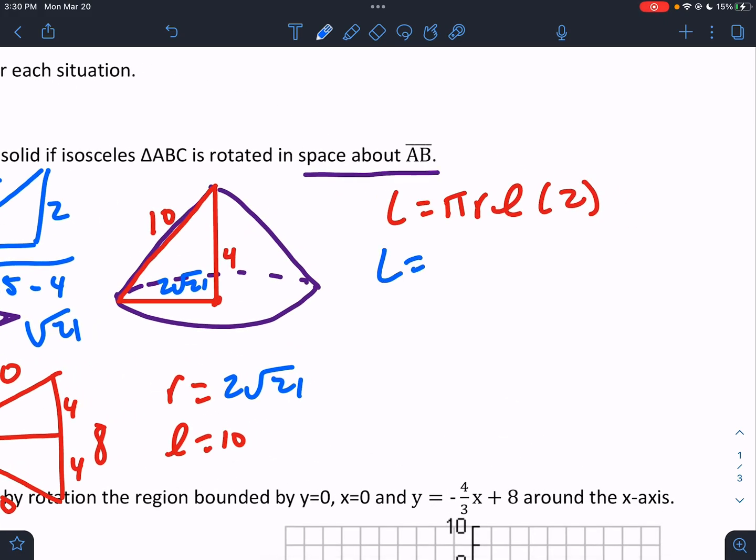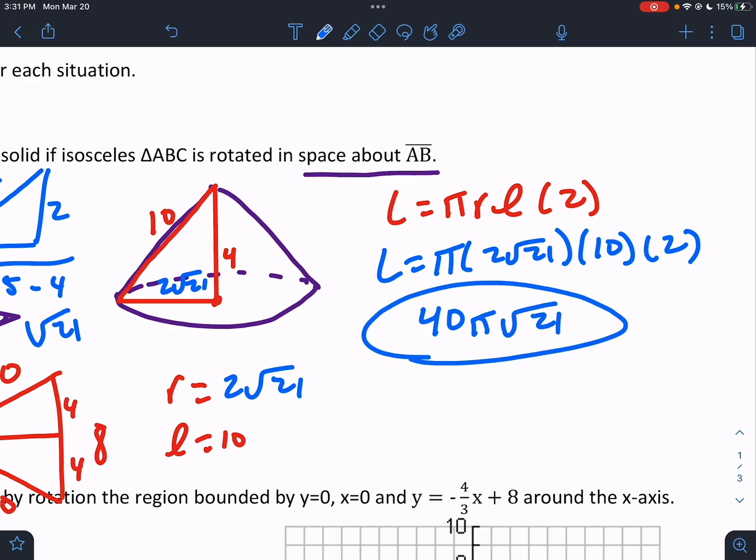So the lateral area would be pi times the radius times the slant height. And then there are two of them. Right? There's a top cone and a bottom cone. We have two laterals that we have to worry about. 2 times 2 times 10 would be 40. There's a pi, and there's a root 21. And that would be our answer.